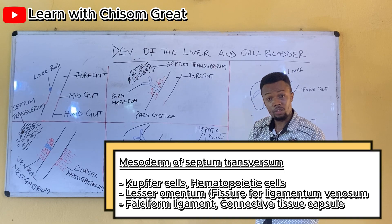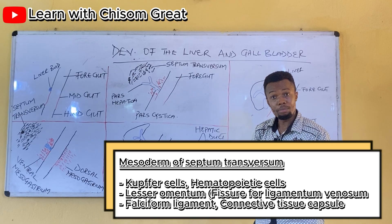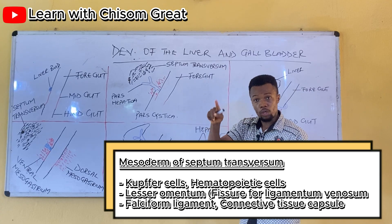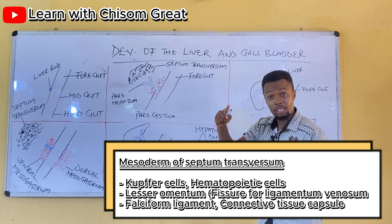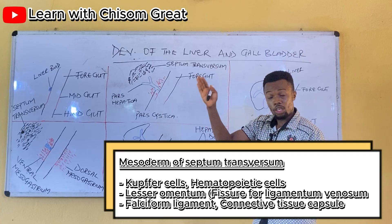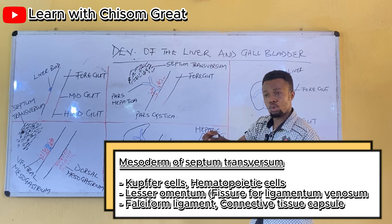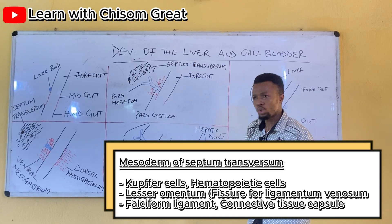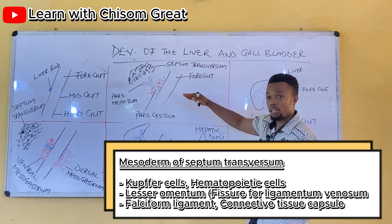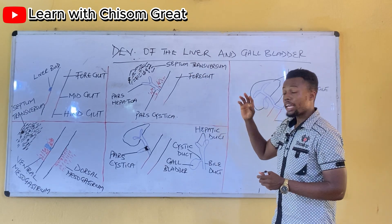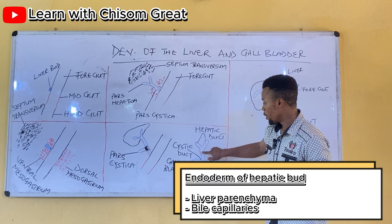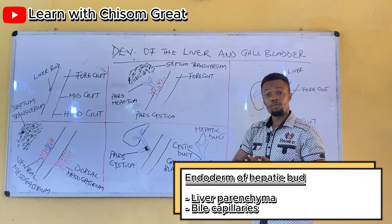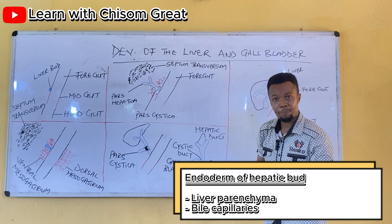The mesoderm of the septum transversum gave rise to the Kupffer cells of the liver, the hematopoietic cells of the liver, the lesser omentum that lies in the fissure for ligamentum venosum, the falciform ligament that divides the liver into right and left lobes, and also the capsule — the connective tissue covering of the liver.